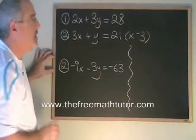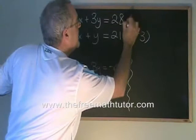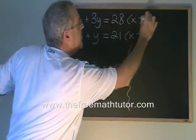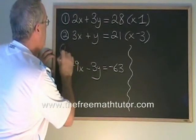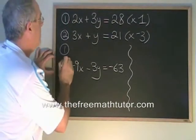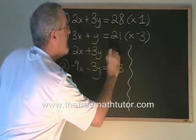So we don't have to change the first equation at all, and I'd like to show that by saying times 1. This equation times 1 is still equal to the same thing. It's still equal to 2x plus 3y equals 28.